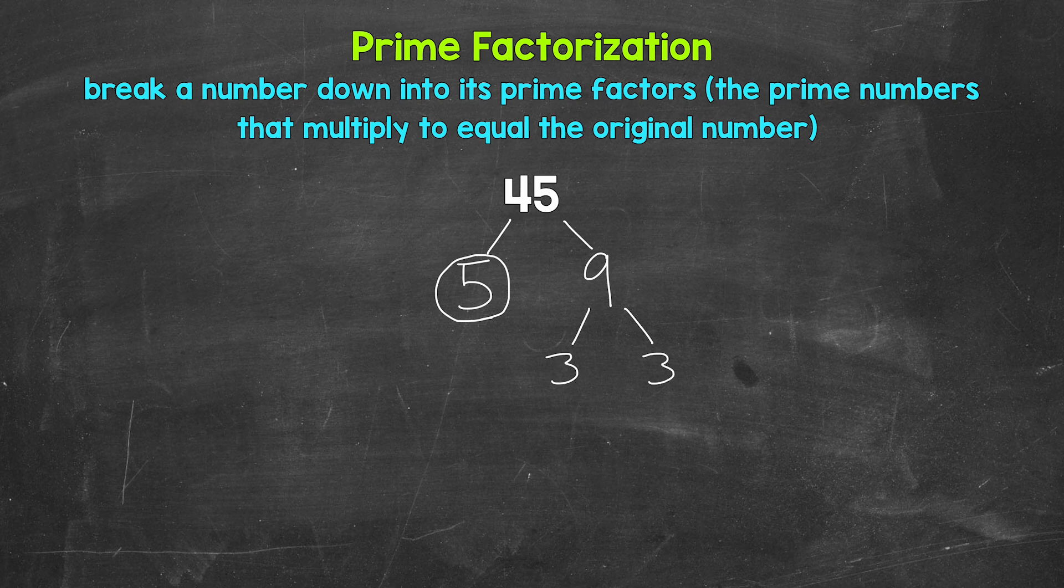3 is a prime number. So we are done here and here. And that's the prime factorization of 45. We can't break anything else down any further. We have all prime numbers. So let's write this out as 45 equals, and then we can write out our prime factors in order from least to greatest. And we are multiplying them.